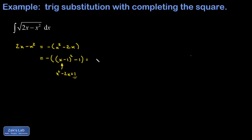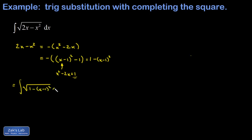Now I can distribute the minus sign back into this expression and write the whole thing as 1 minus the quantity x minus 1 squared. So our original integral is the integral of the square root of 1 minus the quantity x minus 1 squared, dx.